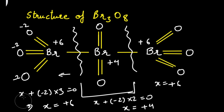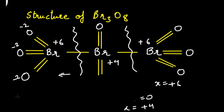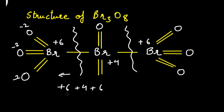Now let's calculate the average oxidation state of the bromine atoms: (6 + 4 + 6) / 3 = 16/3. This is the fractional oxidation state for Br₃O₈.